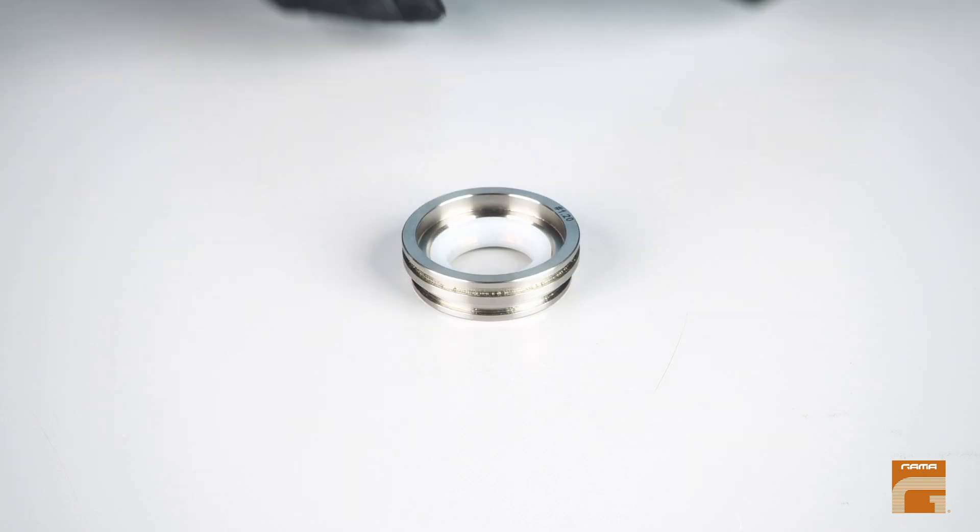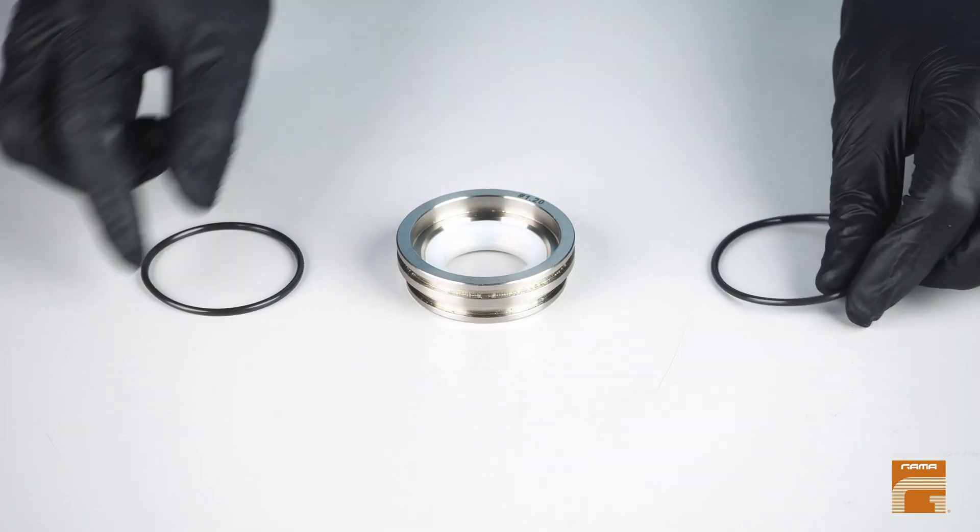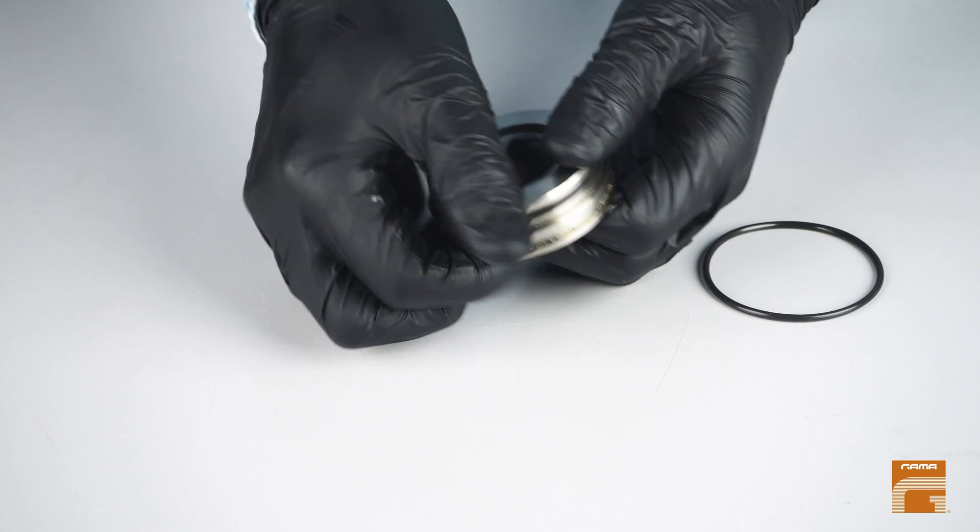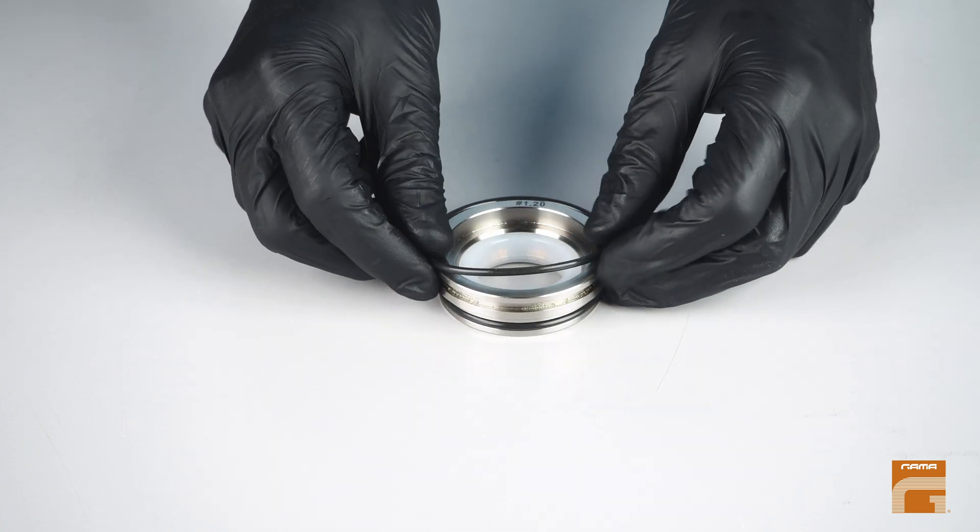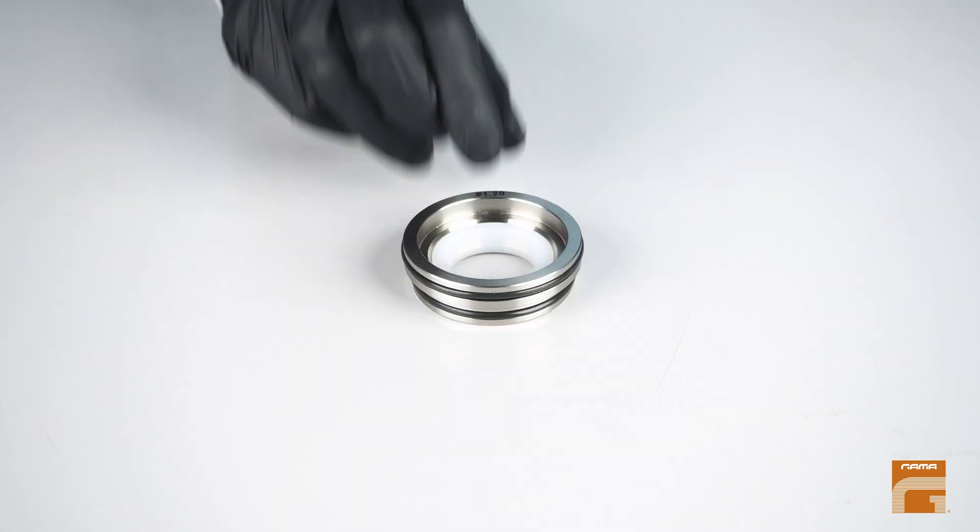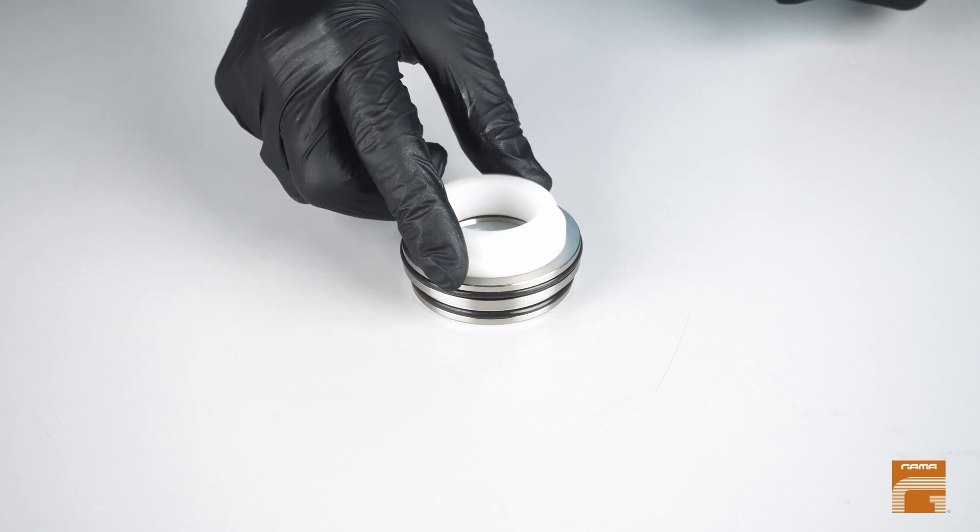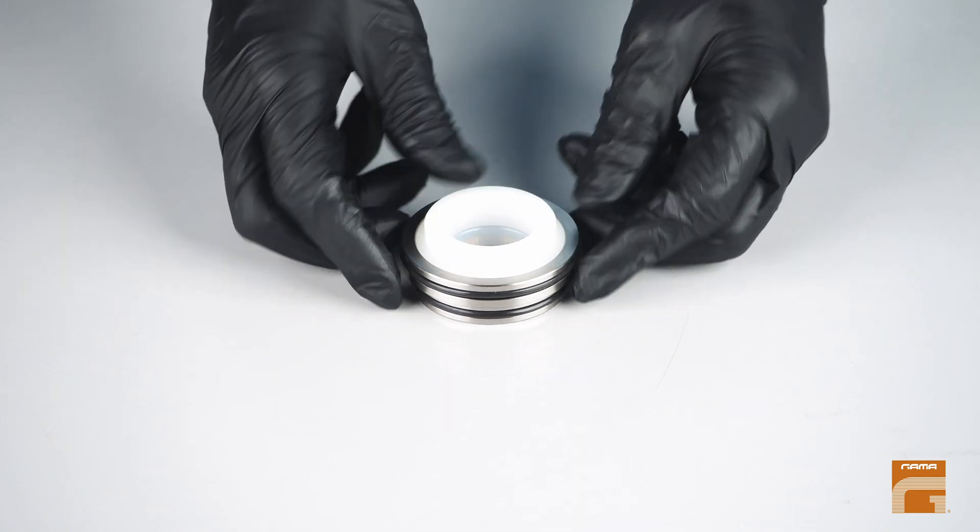Do not forget to replace the rubber o-rings on the metal bushing in accordance with their size. Put the plastic guide on and do not forget to apply some grease.